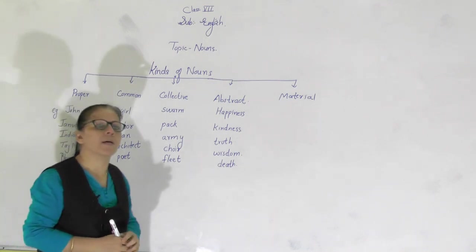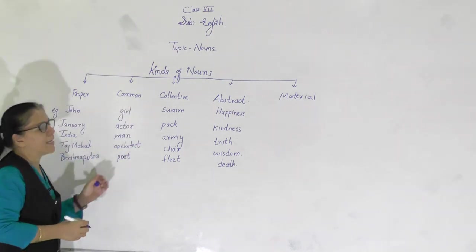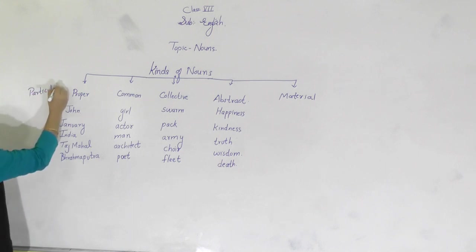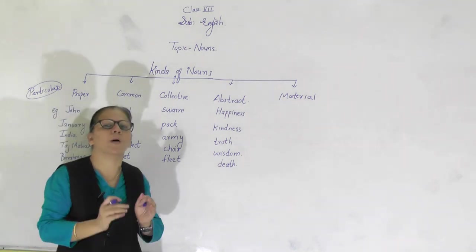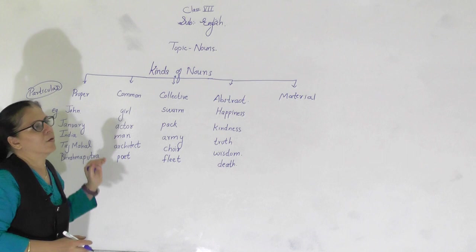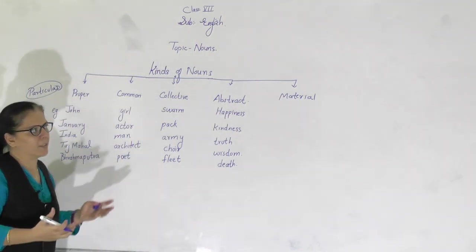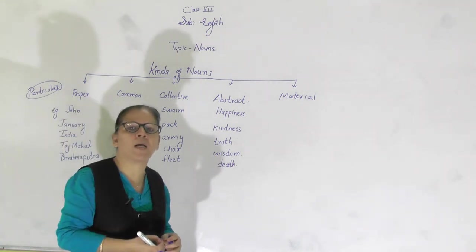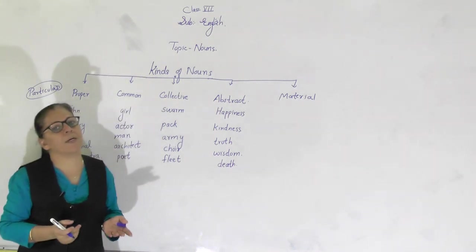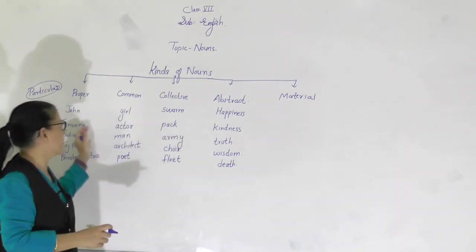First we will start with proper noun. What is a proper noun? A proper noun is a name given to any particular person, place, animal, or thing. For example, John — there may not be many persons whose name is John, so if I say John, I am talking about someone particular. Or January — if I say 'month' it is not a proper noun, but if I specify the name of the month as January, then it is a proper noun.